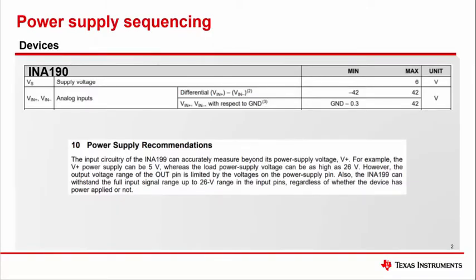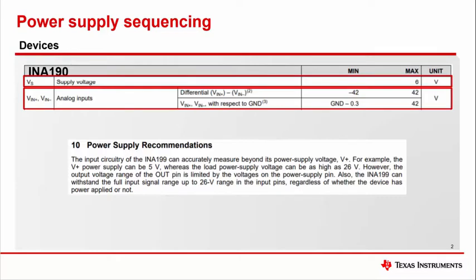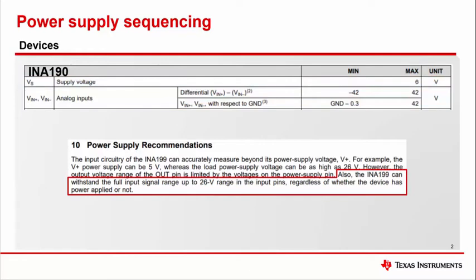Current Sense Amplifiers and power monitors have a significant benefit over other amplifiers in that the voltage rail from which current is measured can exceed the voltage source that powers the device. There rarely are datasheet requirements for Current Sense Amplifier products that dictate a supply power-up sequence, and in general these products should be okay — not necessarily operational, but also not suffering damage — in the presence of one supply and absence of the other.